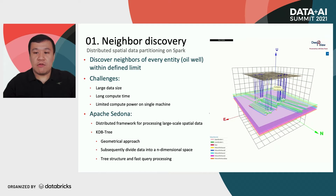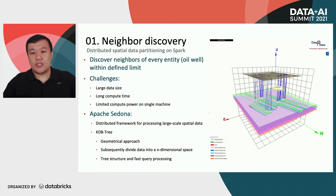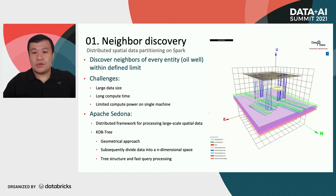So we started using Apache Sedona, also called GeoSpark, which is a distributed framework for processing big spatial data. One of the main algorithms we use is a KDB tree, which is a geometric approach. Basically, it subsequently divides data into n-dimensional space, builds a tree structure, and we can query data points based on distance very fast.